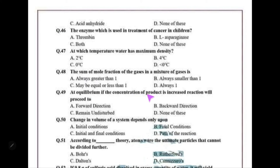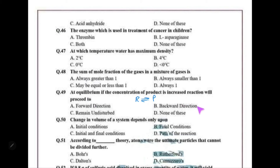If the concentration of products is increased at equilibrium, the reaction will proceed in the backward direction toward reactants. So at equilibrium, if the concentration of products is increased, the reaction proceeds in the backward direction.